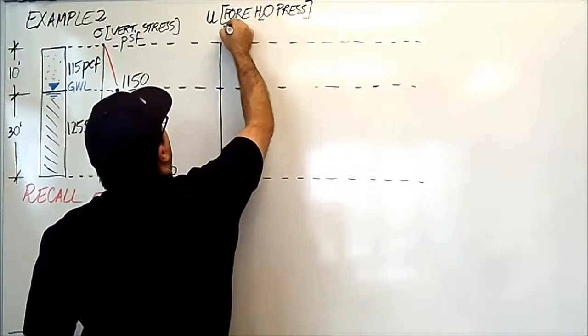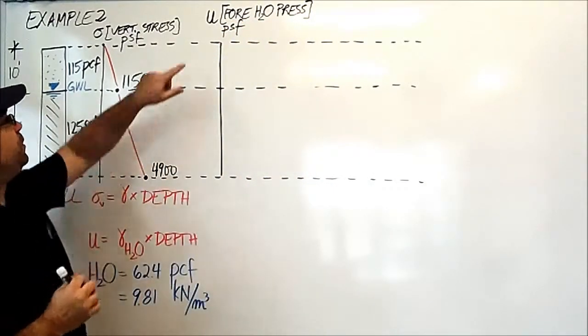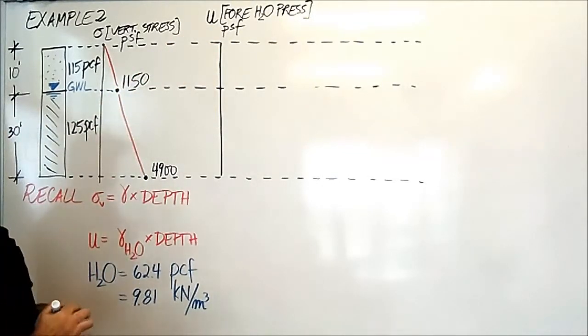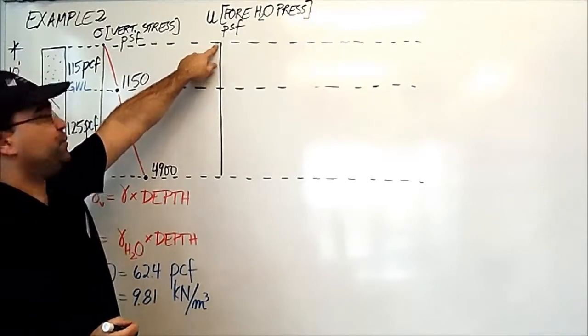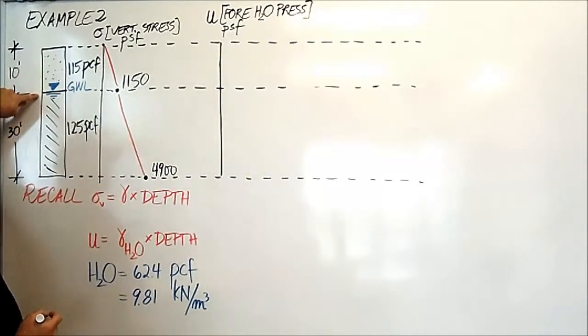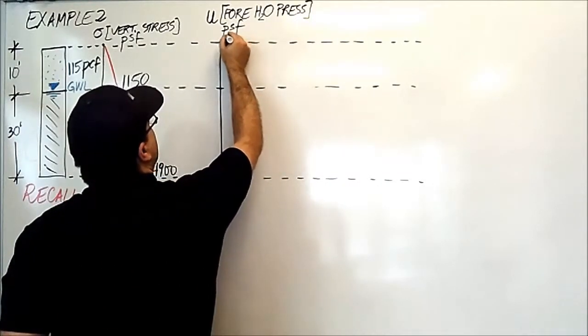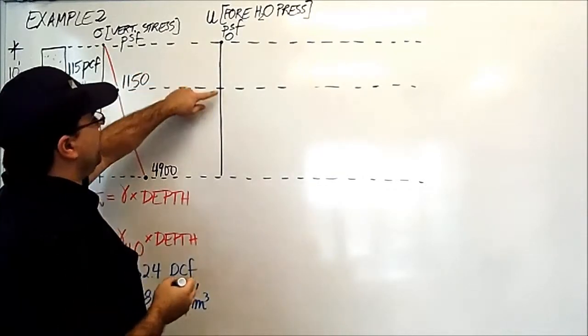The units are in pounds per square feet, and as you've been shown in the course notes, we use the letter U for it. At the surface, there is no water. It's not until we get to 10 feet below that we have any water. So at the surface here, we have zero.